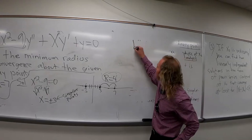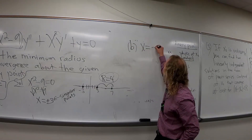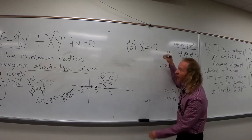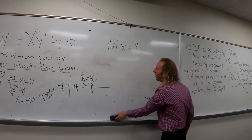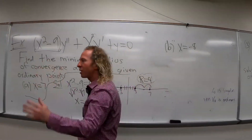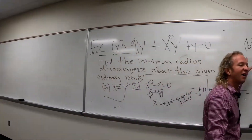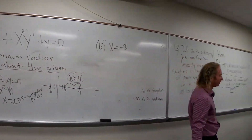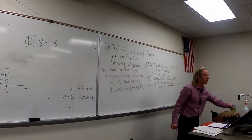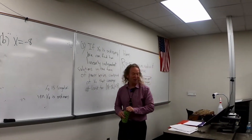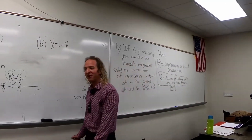Here's another one. Part B. X equals negative eight is your ordinary point. See if you can find R on your own. Take a minute and see if you can find R in this problem. Is it five? Yes, it is. It's that easy. It's five, right?